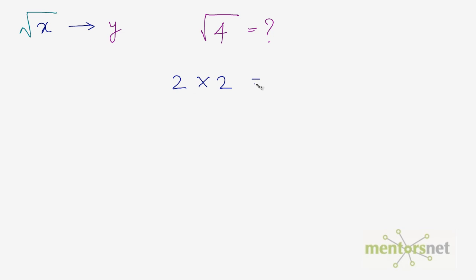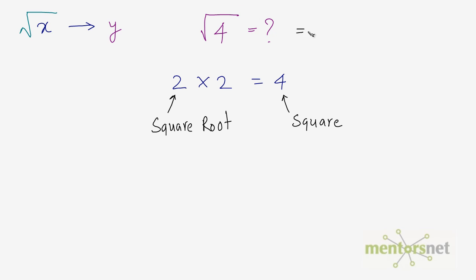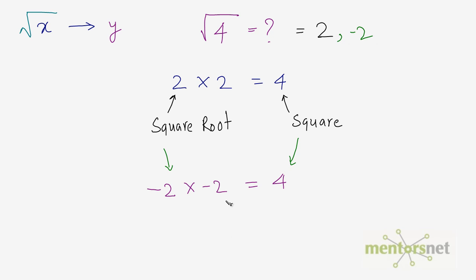So 2 times 2 gives us 4. Therefore 4 is known as the square of 2, and 2 is known as the square root of 4. Therefore the square root of 4 is equal to 2. But this doesn't end here — we also know that minus 2 times minus 2 also gives us 4. Hence minus 2 is also the square root of 4, so we can write 2 comma minus 2. Therefore the square roots of 4 are 2 and minus 2.